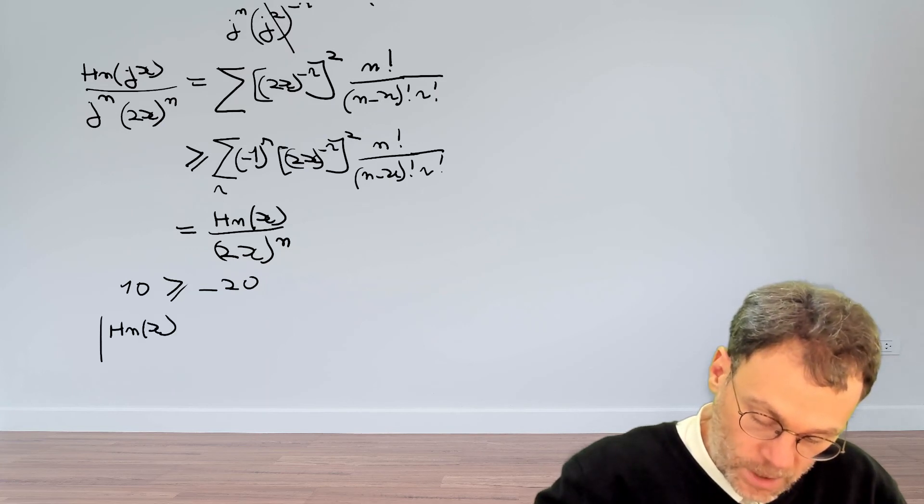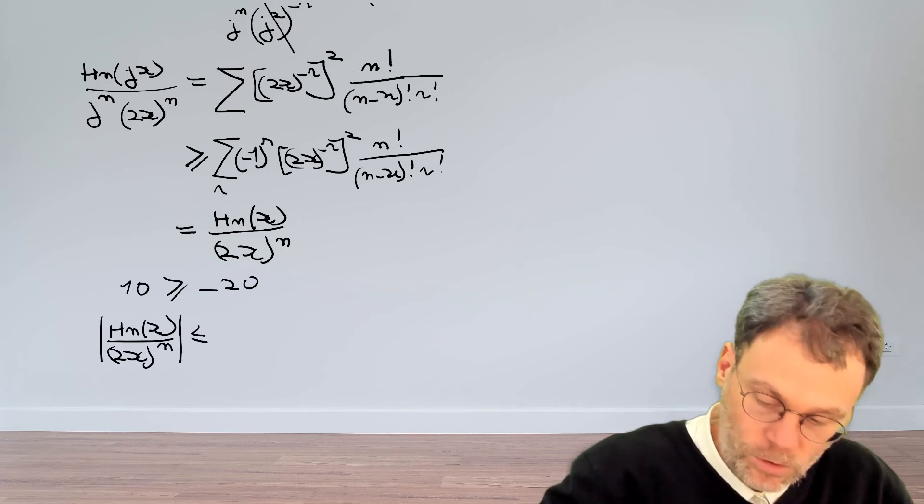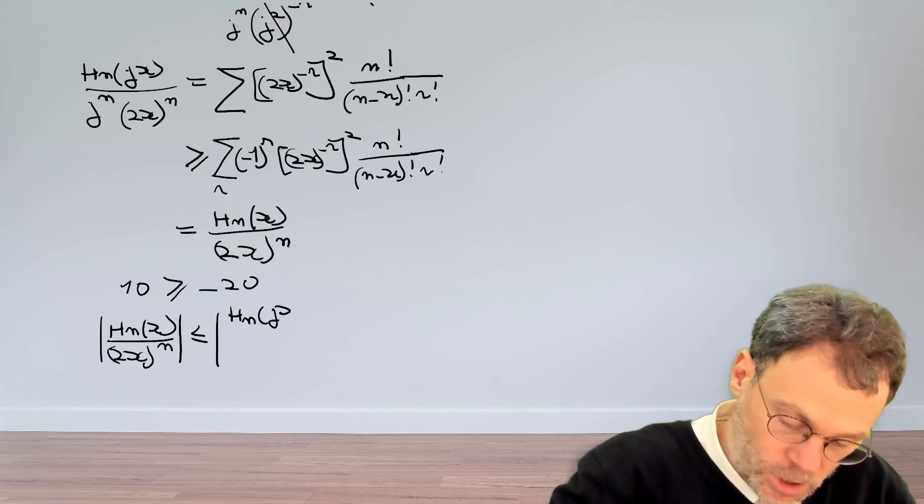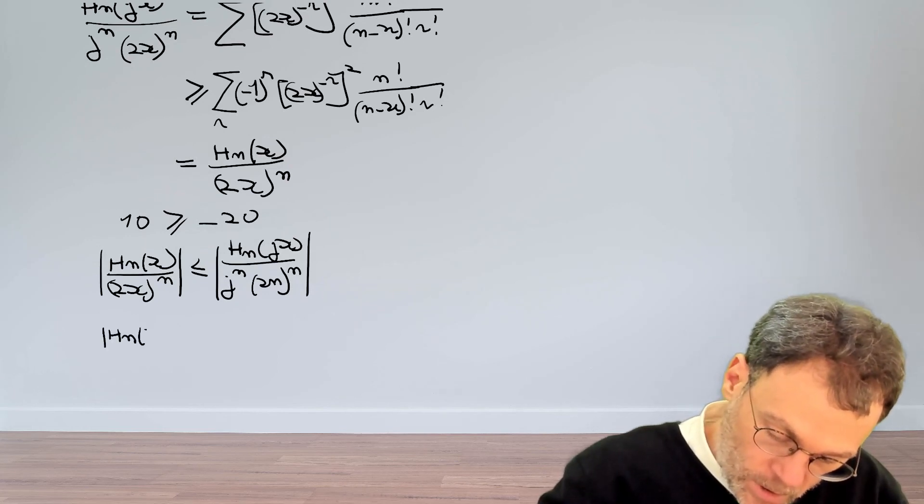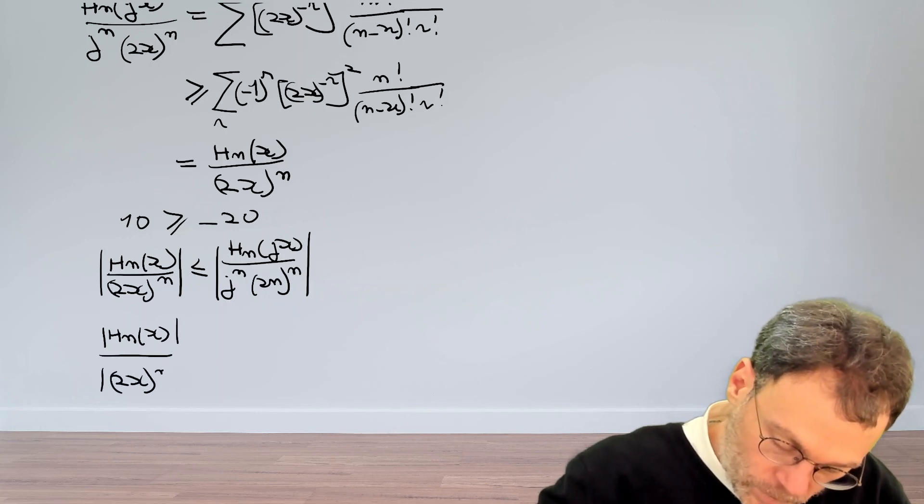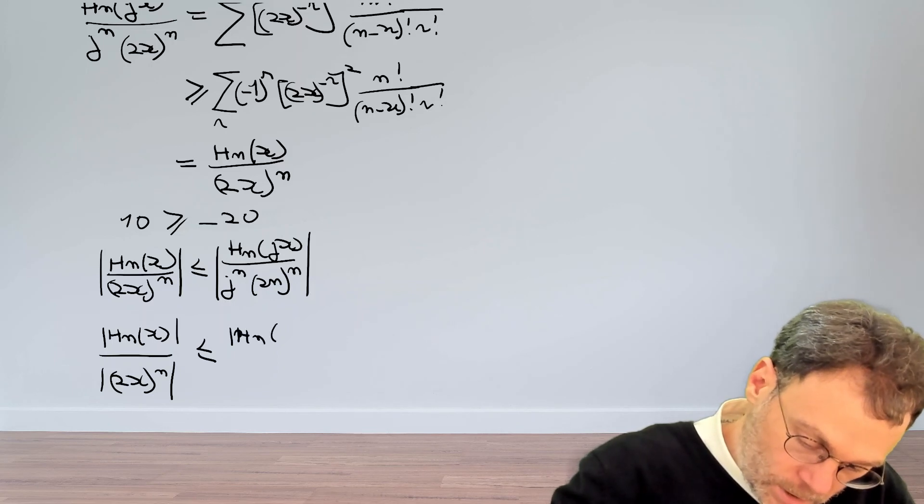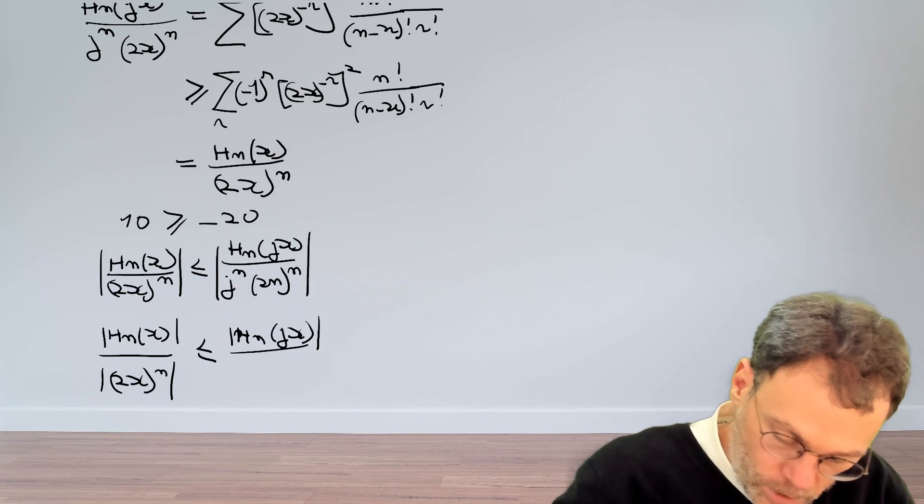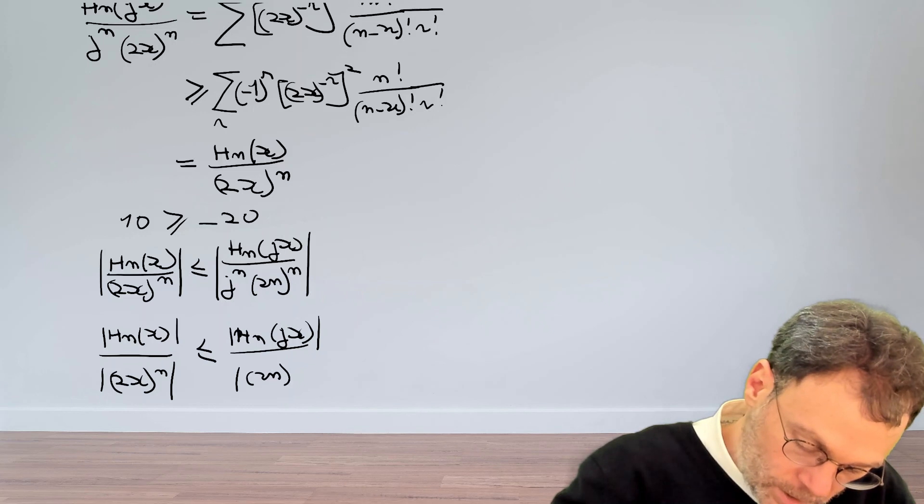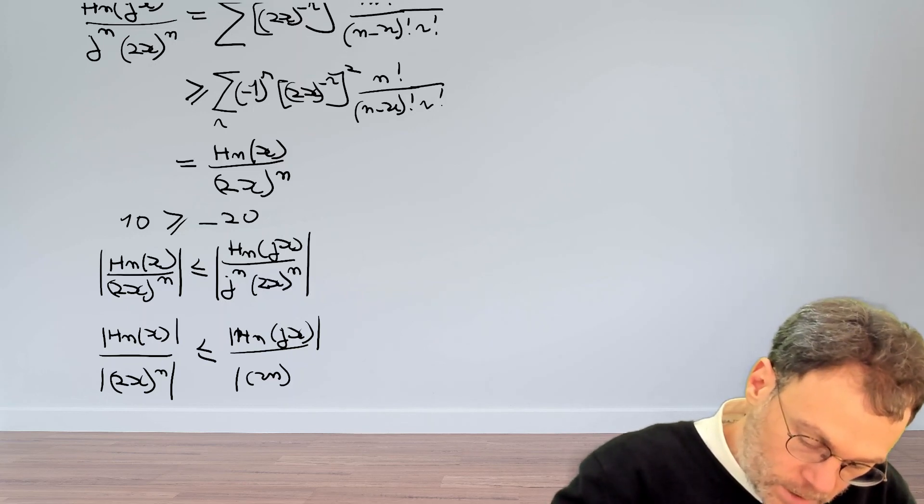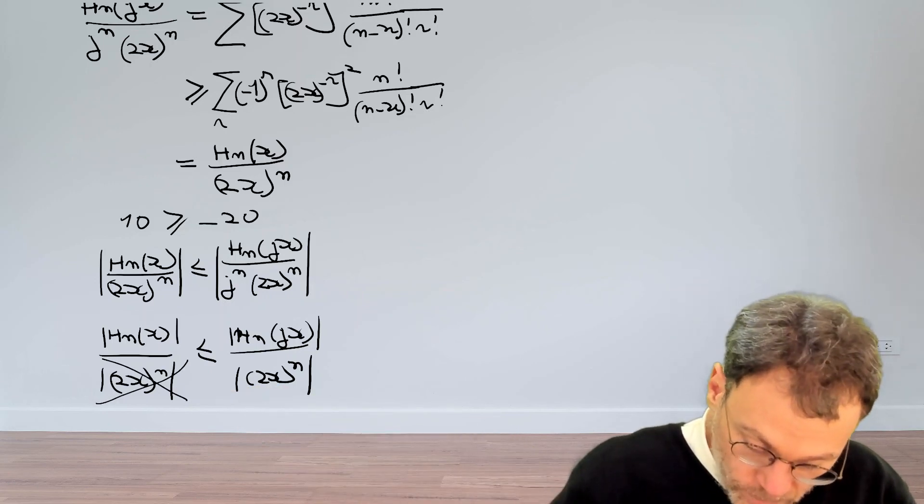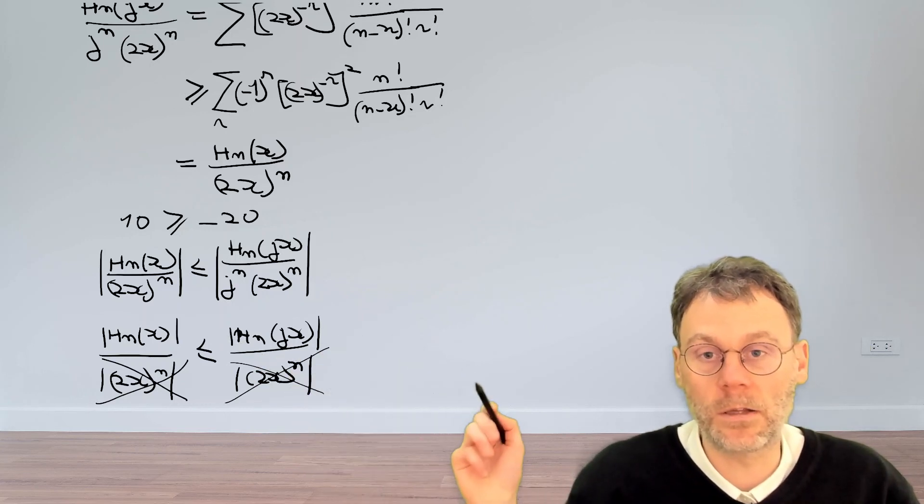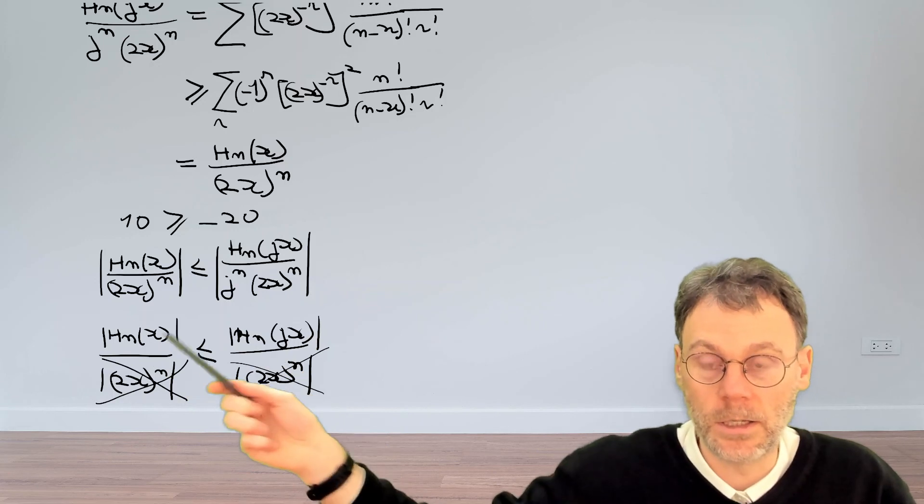So we can write down that Hn(x) absolute value, divided by 2x to the power of n, is smaller than or equal than the absolute value of Hn(jx), divided by j to the power of n, 2x to the power of n. So the absolute value of this fraction here is just the absolute value of numerator versus denominator. So 2x to the power of n, smaller than Hn(jx). Absolute value of j to the sum power is obviously just 1. And then we also have here 2x, that should be 2x, 2x to the power of n. And now these denominators are positive, so we can get rid of those safely without needing to worry of the inequality sign flipping here. And this way we can indeed show that this inequality holds.